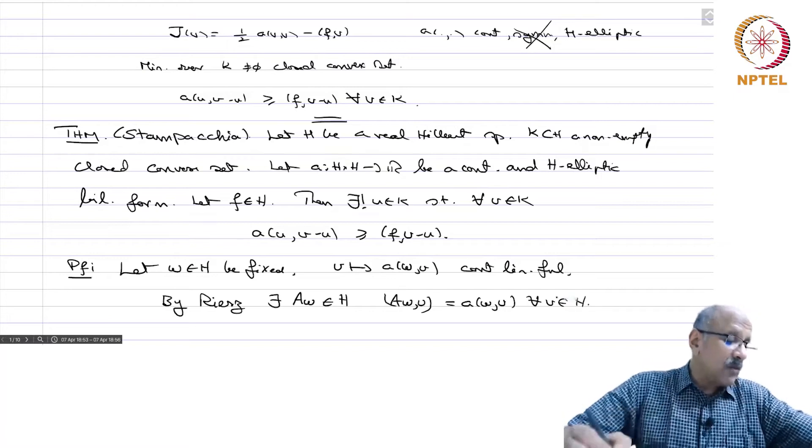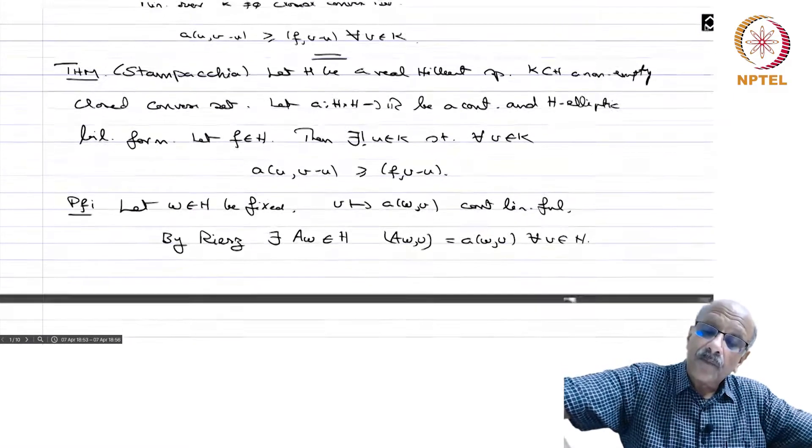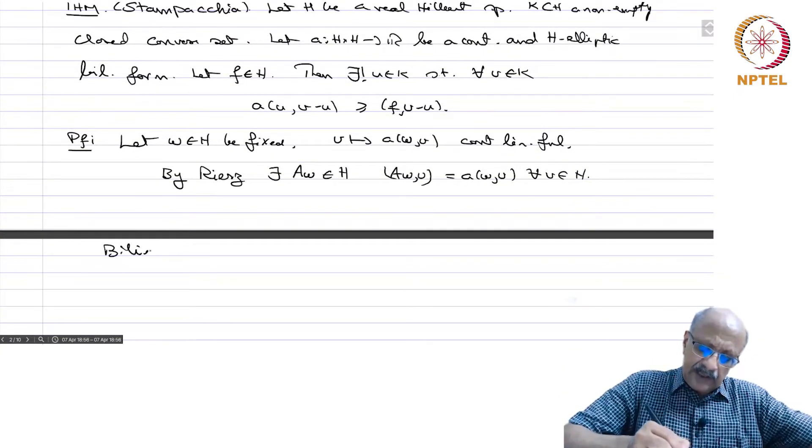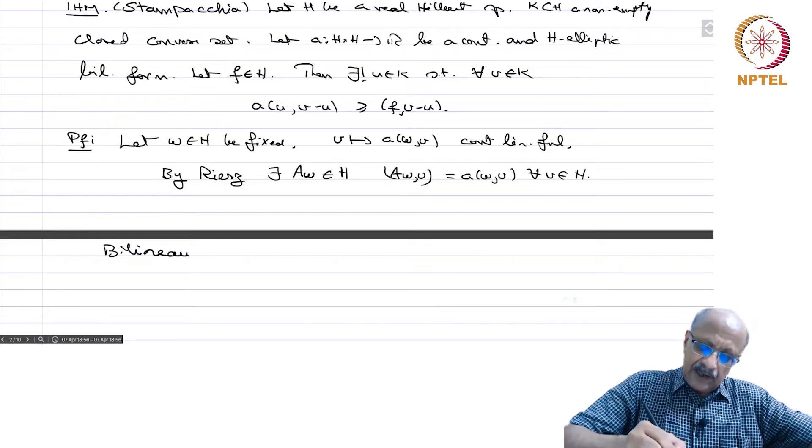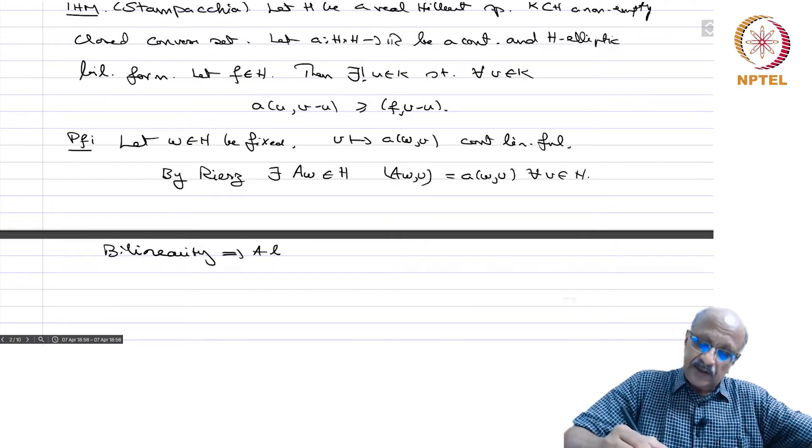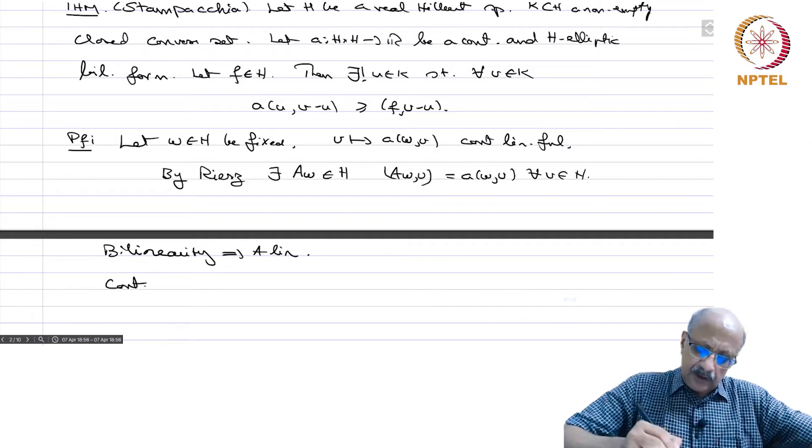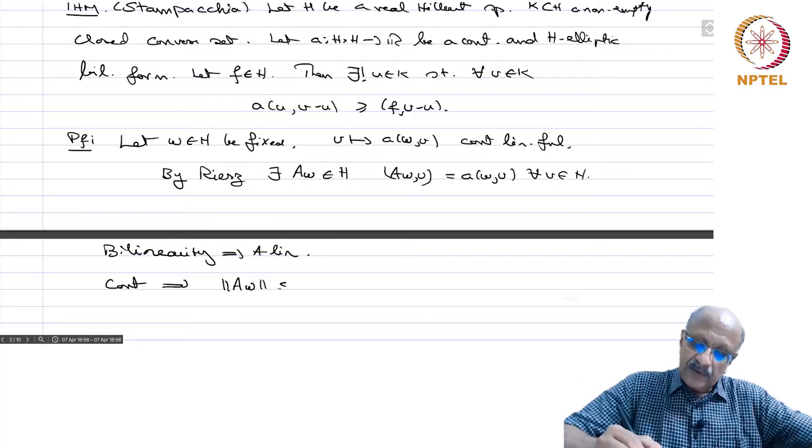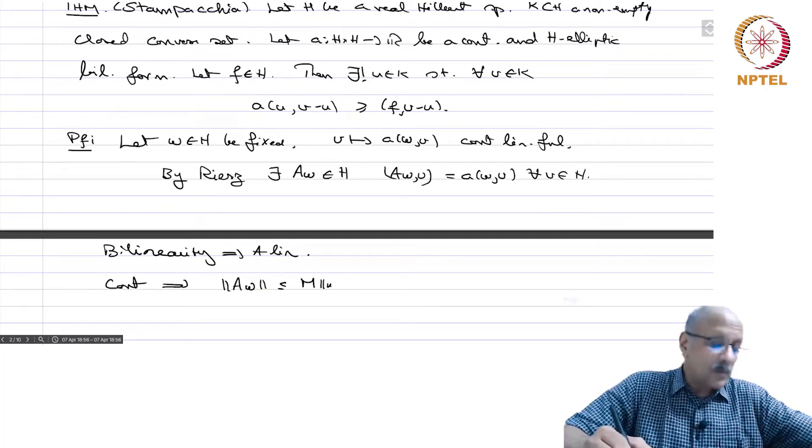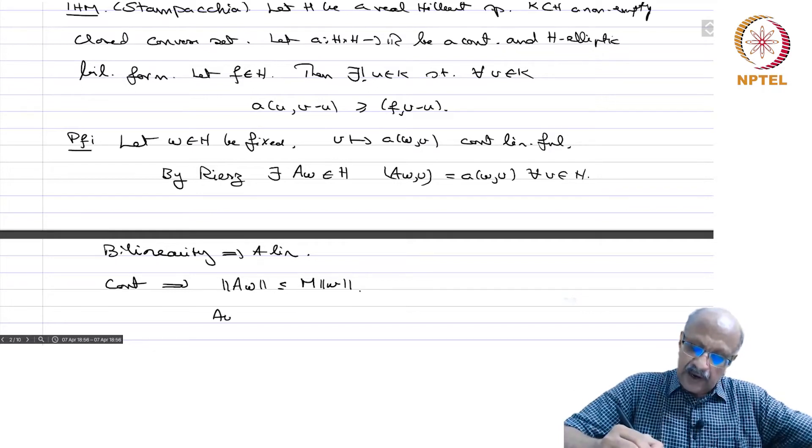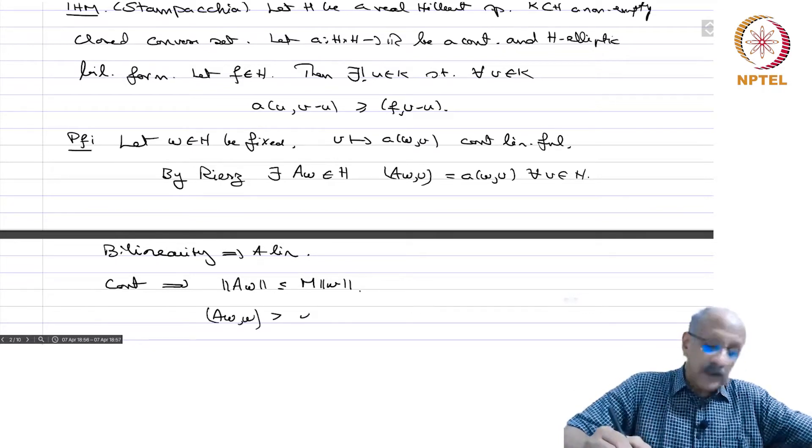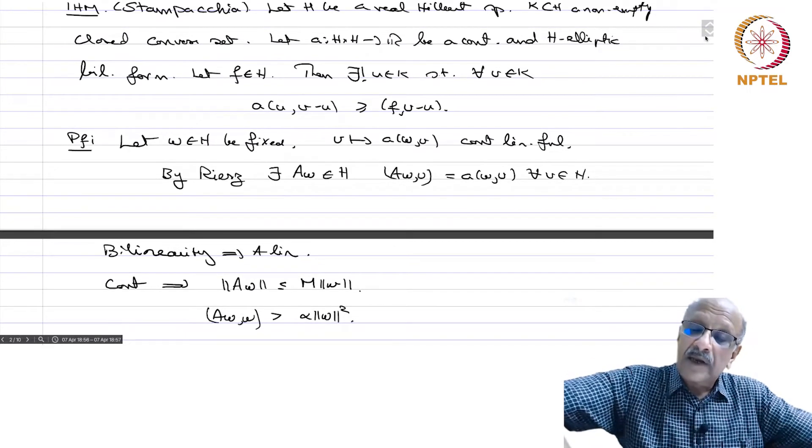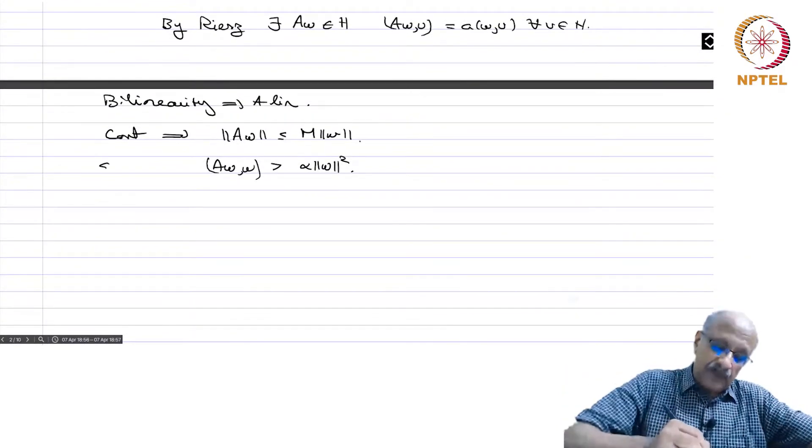By the bilinearity, A is linear. Continuity implies norm of Aw is less than equal to m times norm w, and also you have Aw·w is greater than α times norm w squared. We get these properties immediately from the continuity and H-ellipticity.